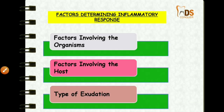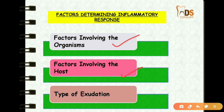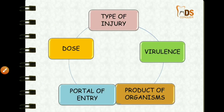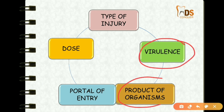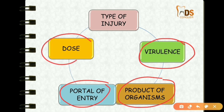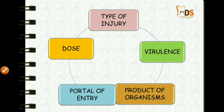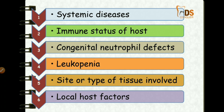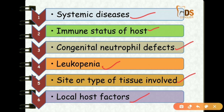The factors determining the inflammatory response include: factors involving the organism — type of injury, virulence of the organism, products of the organism, portal of entry, and dose or concentration of the organism; and factors involving the host — immune system status, systemic diseases, congenital defects, leukopenia, tissues, and local host factors. All these are responsible for the type of acute inflammation.